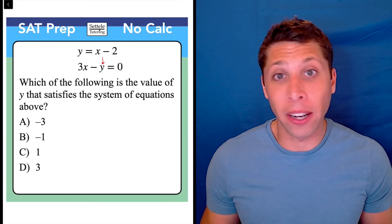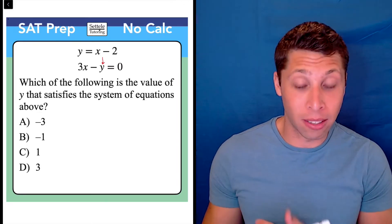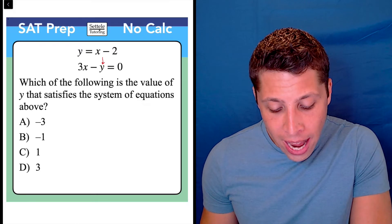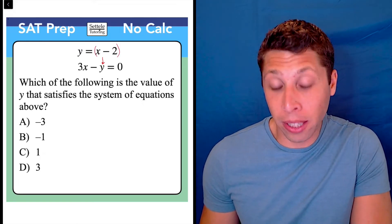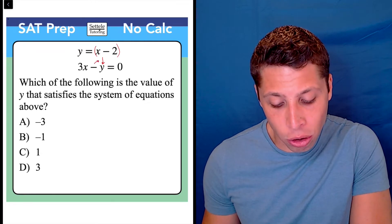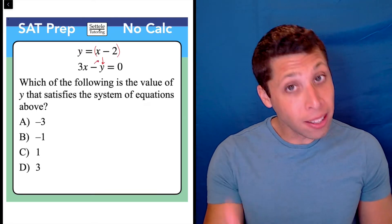That gets rid of the double variable, leaves us only with x's, and then we can solve. The one trick though is you've got to be careful. That negative there means that when we substitute, we're going to have this term in parentheses, and that negative is going to need to be distributed to both parts. That's something that's easy to forget,